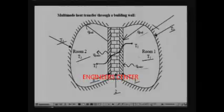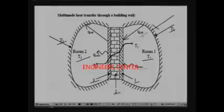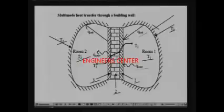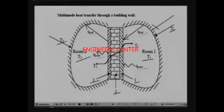The radiation and convection will be happening simultaneously. Then from this point onwards, the heat transfer through this wall is by conduction. So you have initially radiation and convection, then conduction through the wall. And from the wall to room 2, which is at a lower temperature, again the heat transfer is by radiation and by convection, because the surface temperature of the wall is different from the surface temperature of the surroundings of room 2.